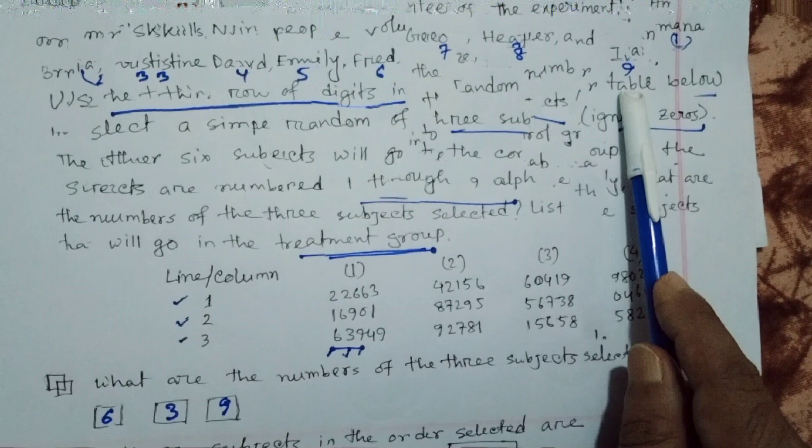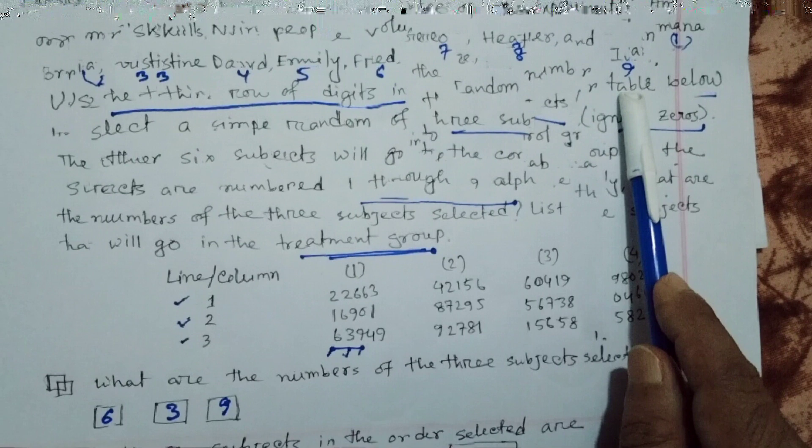The three subjects are ordered as follows: six is Brad, three is Christine, and nine is Evan. So we get our desired result.